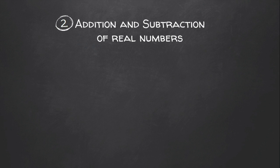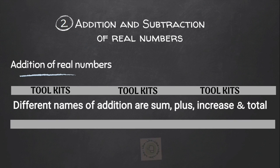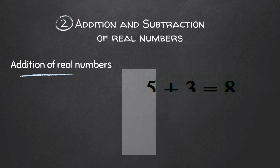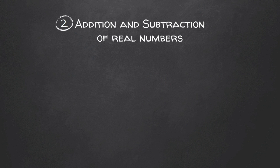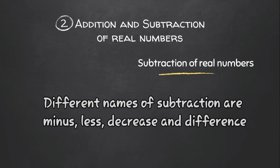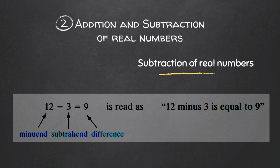Now we learn how to add and subtract real numbers. Addition represents an increase in quantity. The result of addition is called the sum or total, and the numbers being added are called addends. Subtraction is the reverse operation of addition. The result of subtraction is called the difference, the number being subtracted is called the subtrahend, and the number from which we subtract is called the minuend.